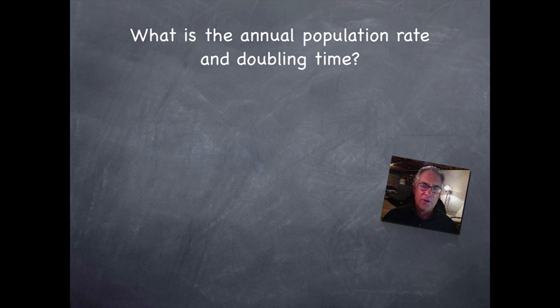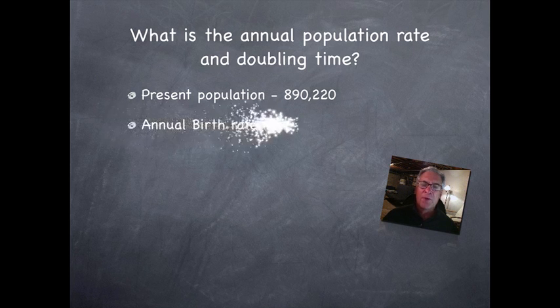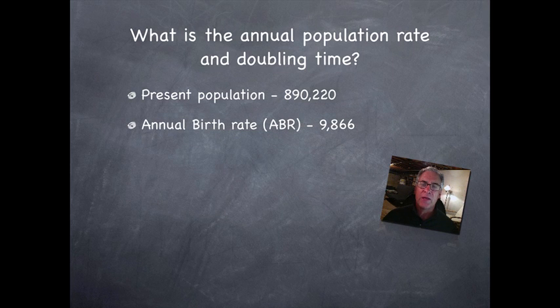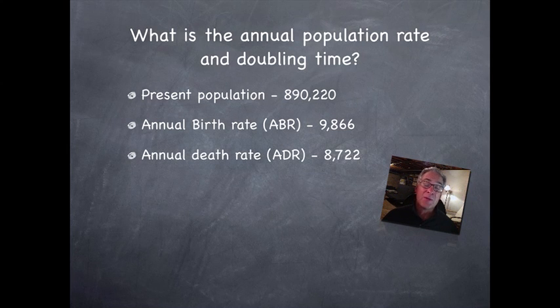One of the questions in your packet is: what is the annual population rate and what is the doubling time? These are the current numbers for country A. I'd like to do this as a sample problem. The present population is just shy of 900,000 people. The annual birth rate, sometimes called the crude birth rate, is 9,866. The annual death rate, or crude death rate, is 8,722. You can see that in the natural progression of birth and death, this country has more births than deaths. But there are other things to consider.